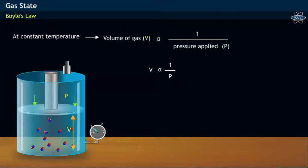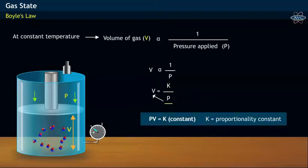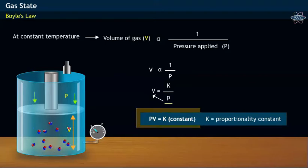On taking P value to the other side of the equation, we get PV equals constant K. Here K is the proportionality constant. The pressure-volume product PV equals constant is said to be Boyle's law.